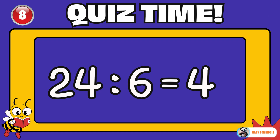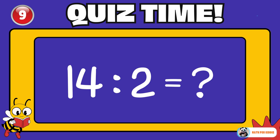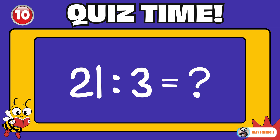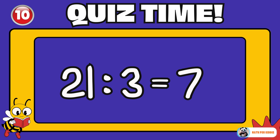Great job! Can you guess this one? 14 divided by 2 is equal to? 7. 21 divided by 3 is equal to? 7.